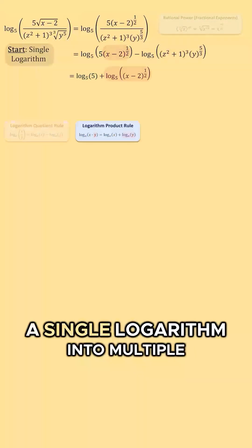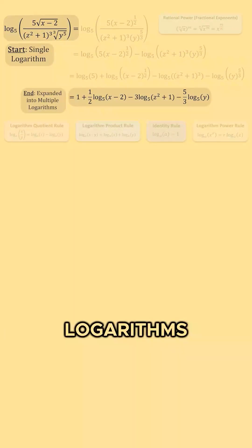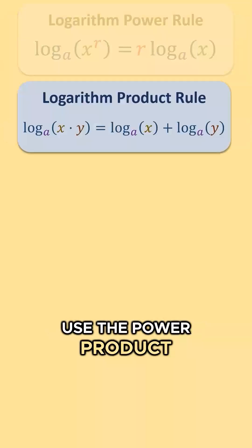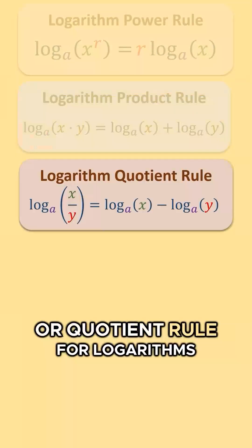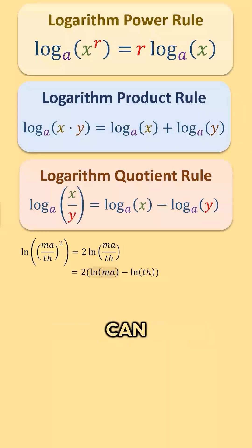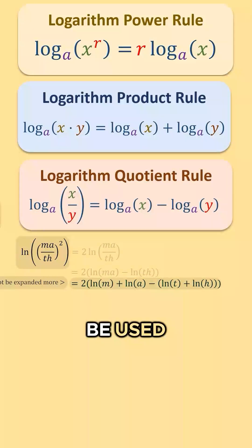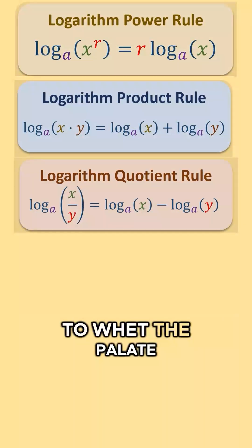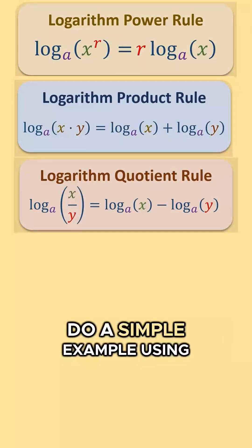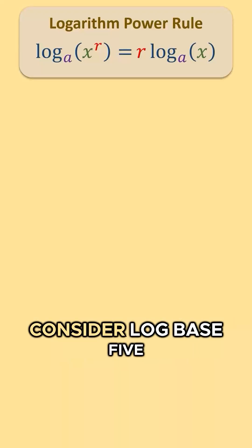The goal is to expand a single logarithm into multiple logarithms. We are going to use the power, product, or quotient rule for logarithms to expand the logarithm as much as we can until it can no longer be used. To wet the palette, let's go ahead and do a simple example using each of these rules, starting with the power rule.